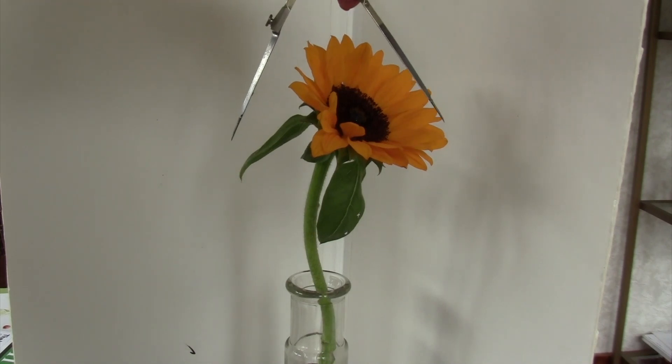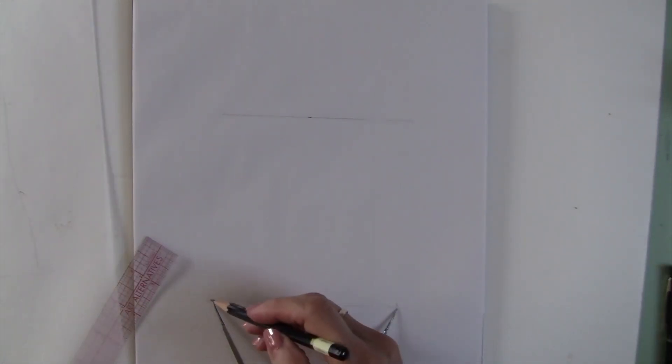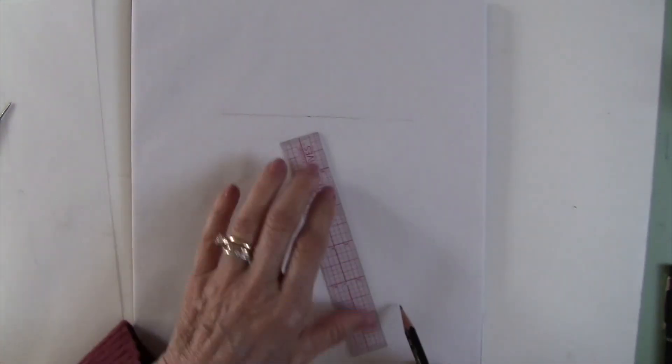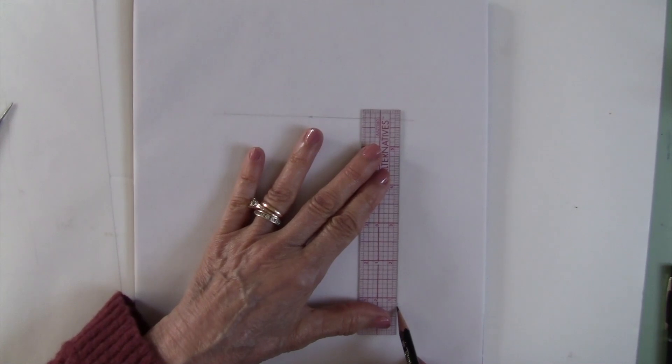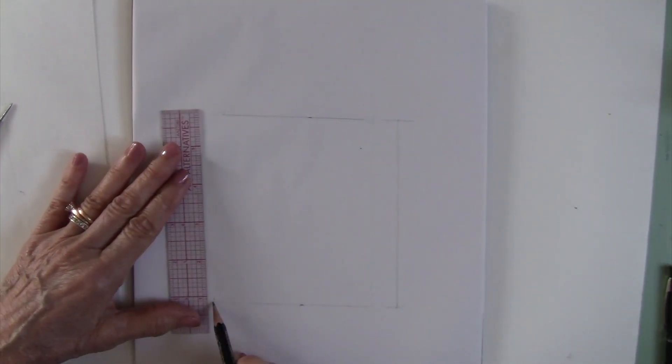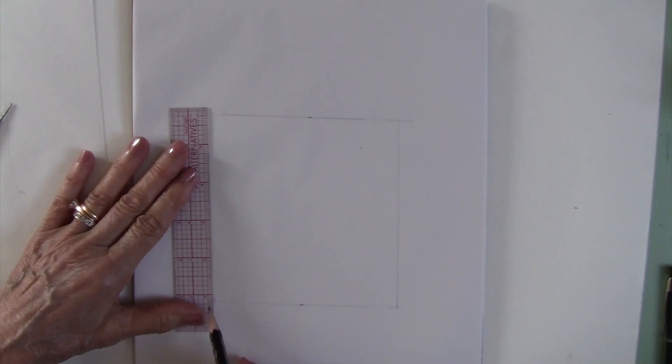And then we'll do the width measure for the entire flower plus the leaf, and then we'll draw the width of the flower and the leaf and draw our line up. This will give us the real estate for that flower.